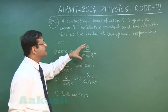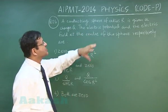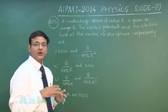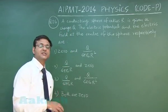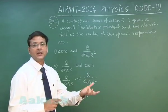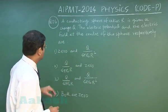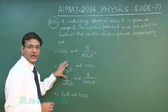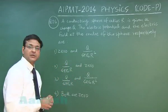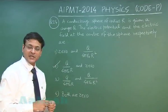The electric potential and the electric field at the centre of the sphere respectively. You see for a conducting sphere the electric field inside is 0, and if you talk about potential that remains constant, and whatever is the surface potential that remains at the centre. So if they are demanding at the centre the potential, potential will be q by 4πε₀r and electric field will be 0. So the most appropriate answer for this question will be option 2 and that explains question number 24.